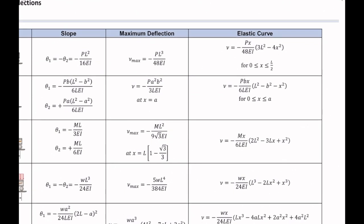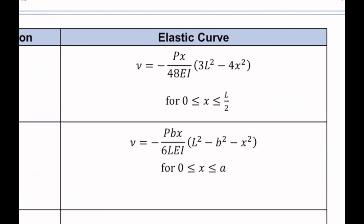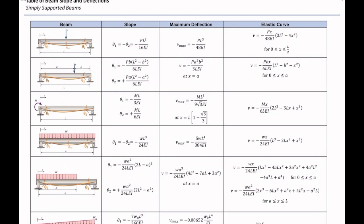Slope is derivative of deformation, right? So, if I derive this equation with respect to x, I would get slope in terms of x. So, if you need that, you can determine that from this. I didn't add extra column because that would be just redundant here.